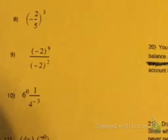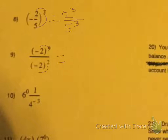On number 8, we need to distribute to the top and bottom first, and you get negative 2 to the 9th over 5 to the 3rd. On number 9, you have to distribute the 9, then you have to distribute the 2, so you get negative 2 to the 9th over negative 2 to the 2nd.